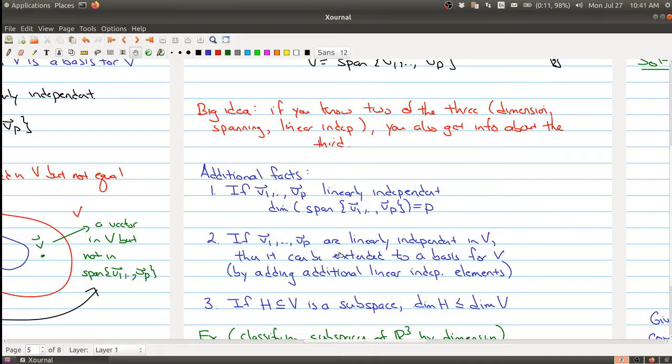If you know that your vectors are linearly independent in V, then it can be extended to a basis for V. So these P vectors may not be, the span of these vectors may not fill up all of V, but what you can do is you can keep adding a linearly independent element one at a time until you start filling up the whole space. This theorem is kind of useful because it allows you to take any set of vectors that are linearly independent and keep adding new vectors until you fill up the whole space.